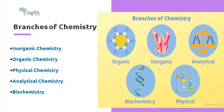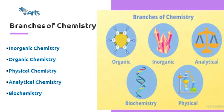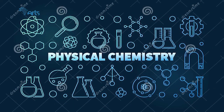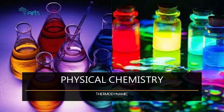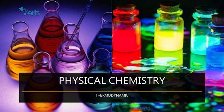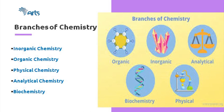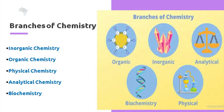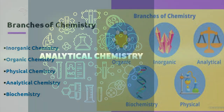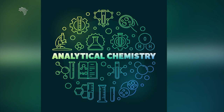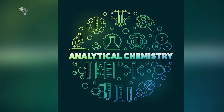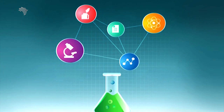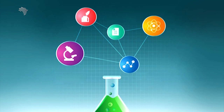The third branch of chemistry is physical chemistry, which is the study of physical properties of materials such as their thermal, electrical, and magnetic behavior, and their interaction with electromagnetic fields. The fourth branch is analytical chemistry, which involves separating, identifying, and determining the relative amount of components in a sample material.